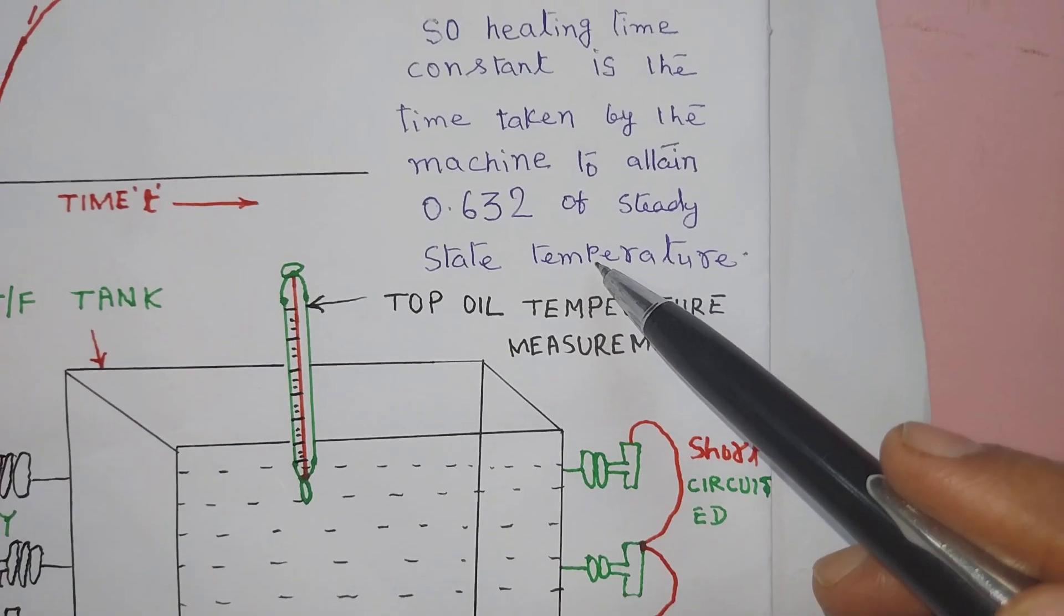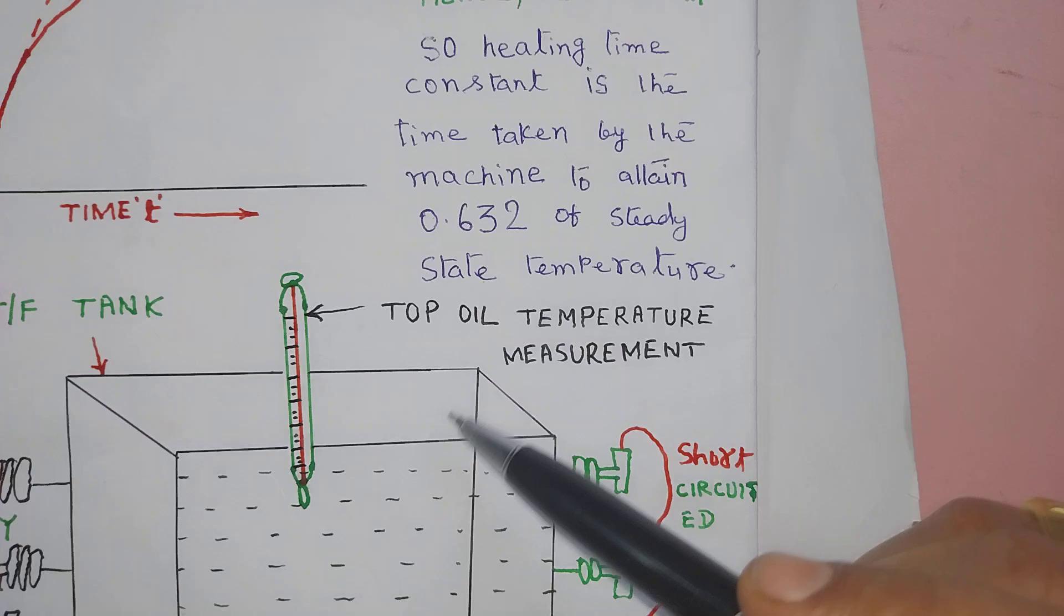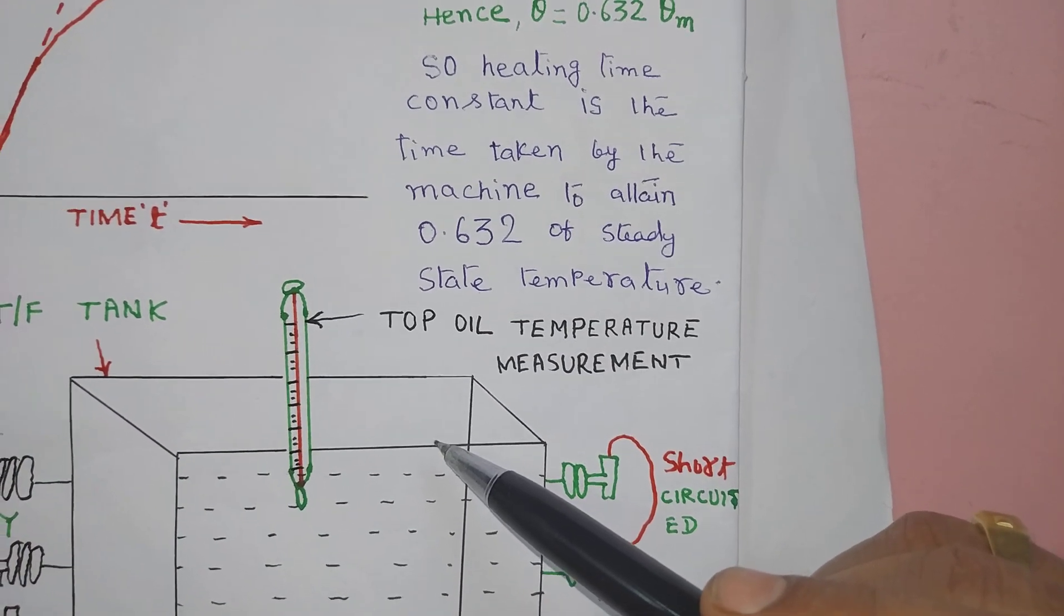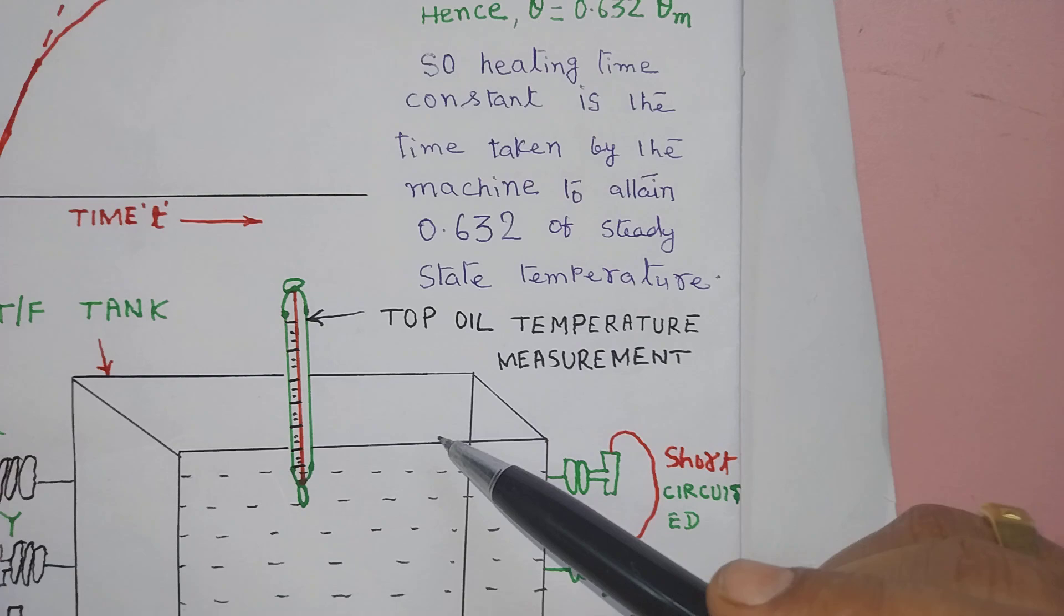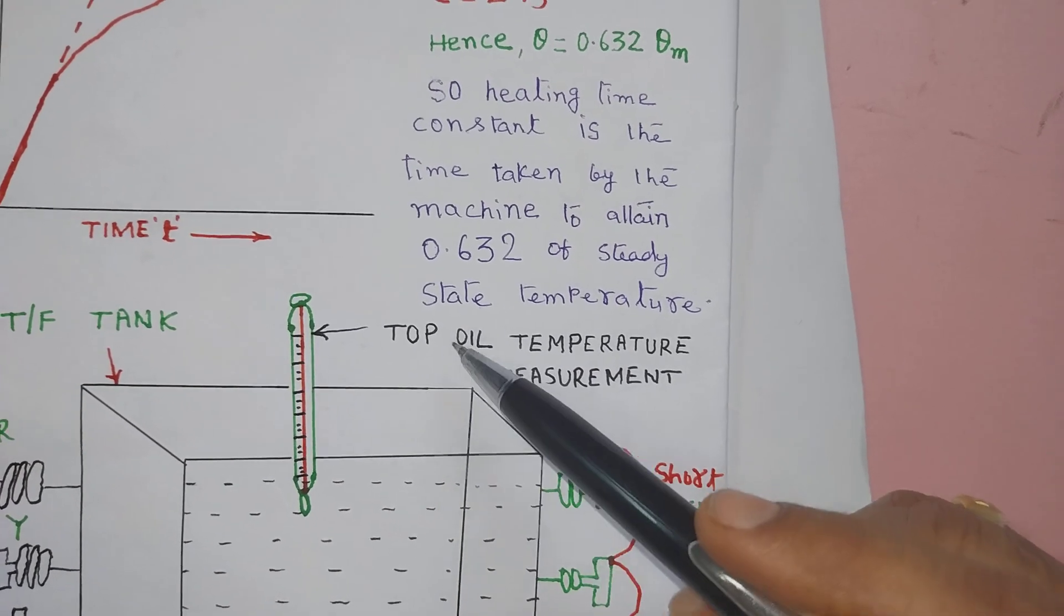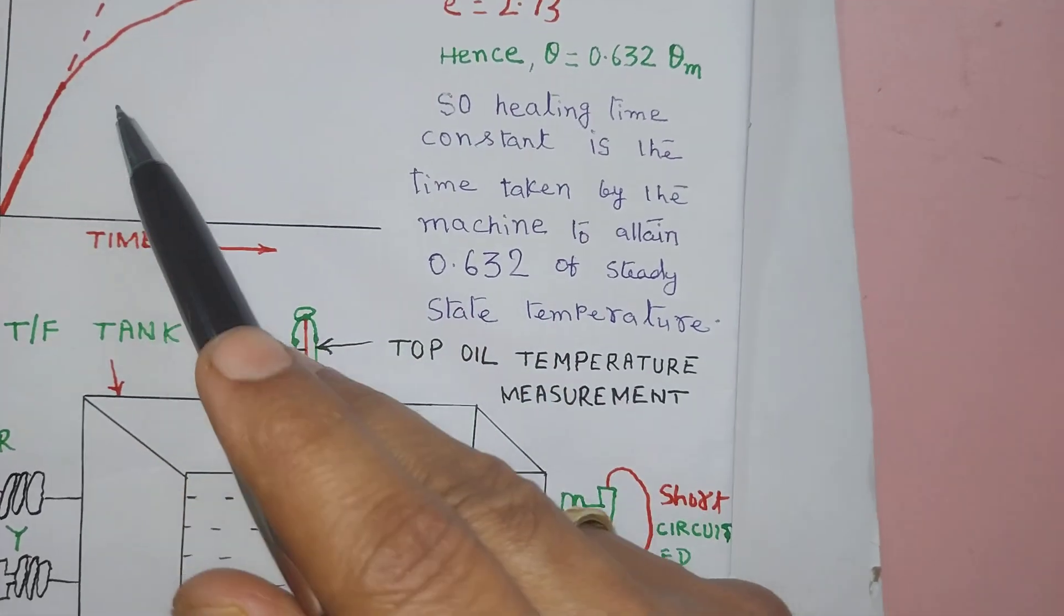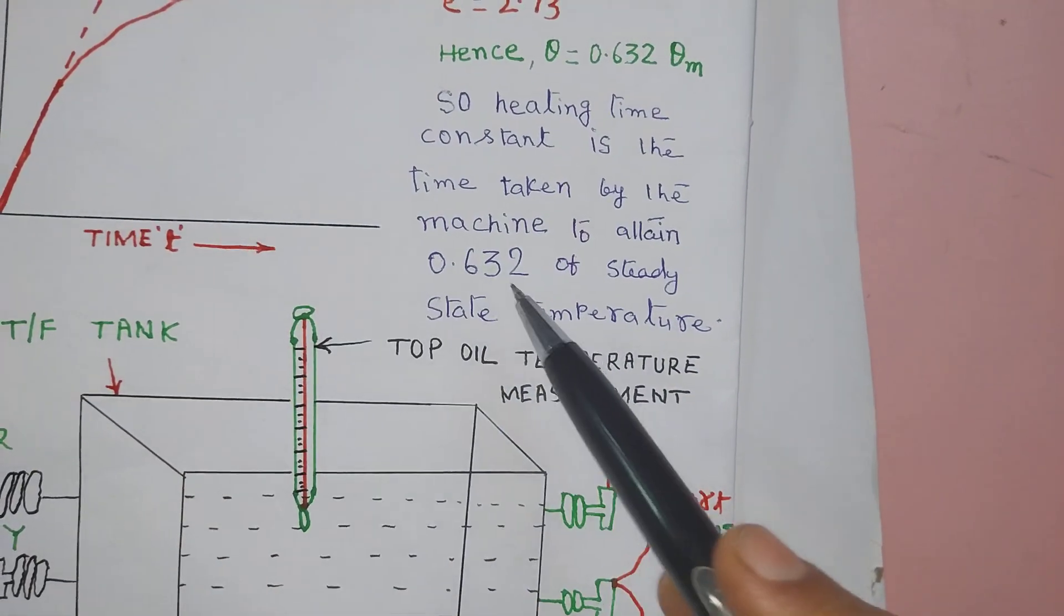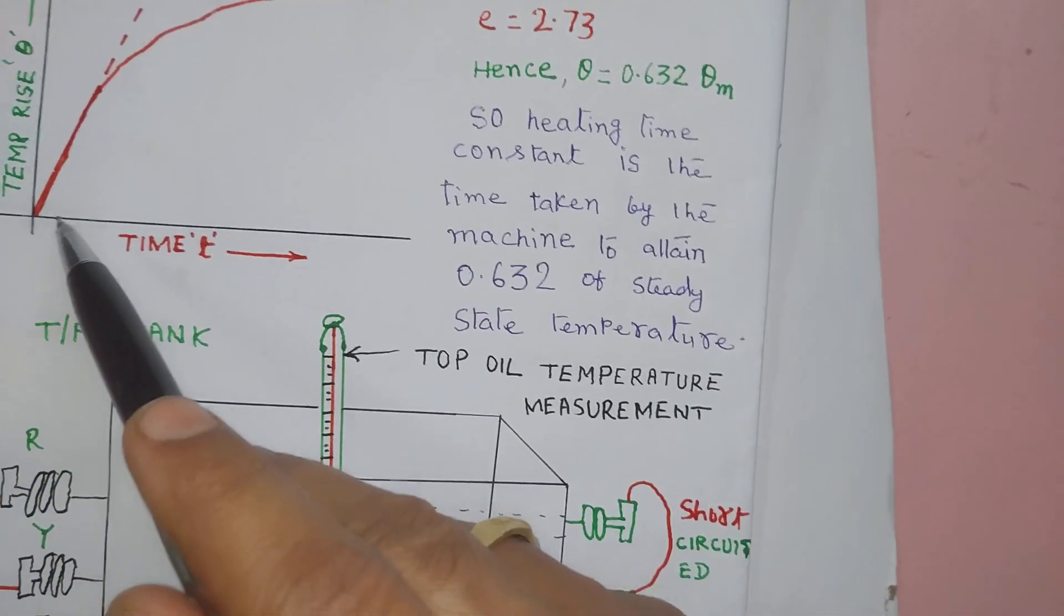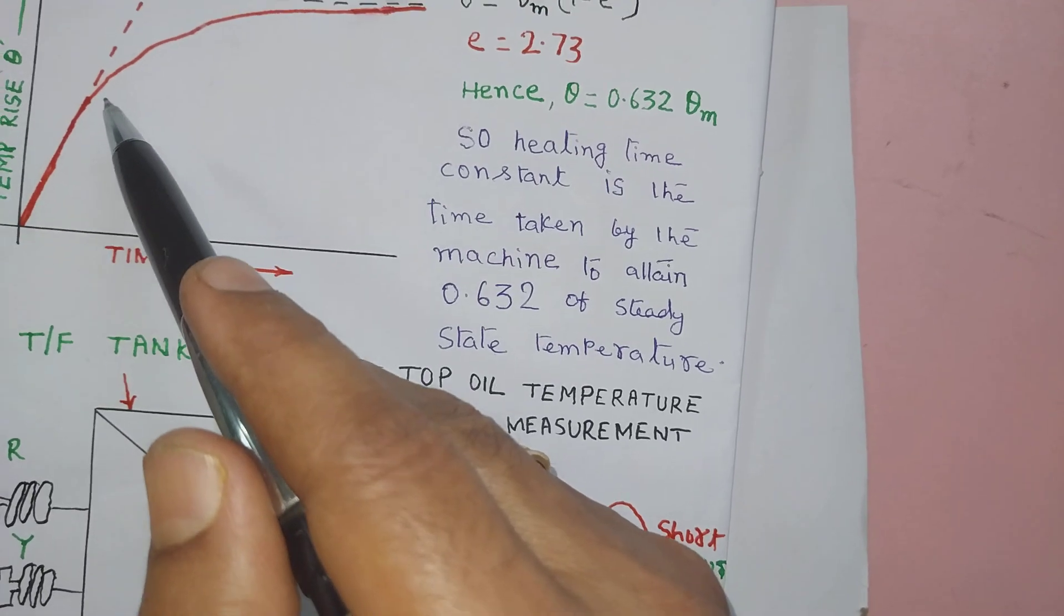Now, permissible temperature rise, or disused rather, top oil temperature rise of transformer under BIS 1180 is 40 degree. So heating time constant is the time taken to arrive at temperature rise of 25 degree centigrade from the ambient.